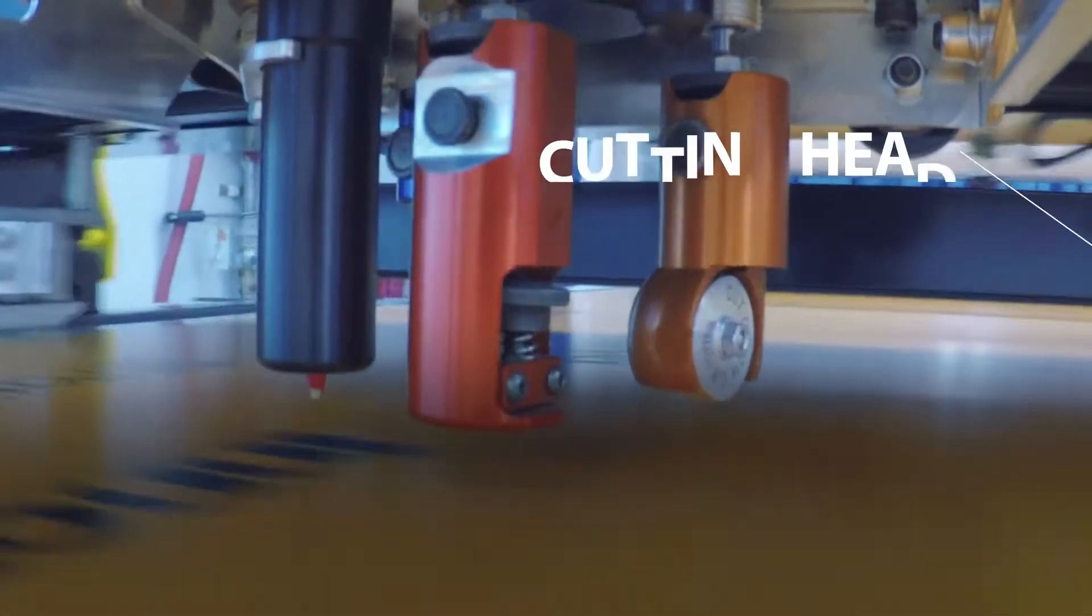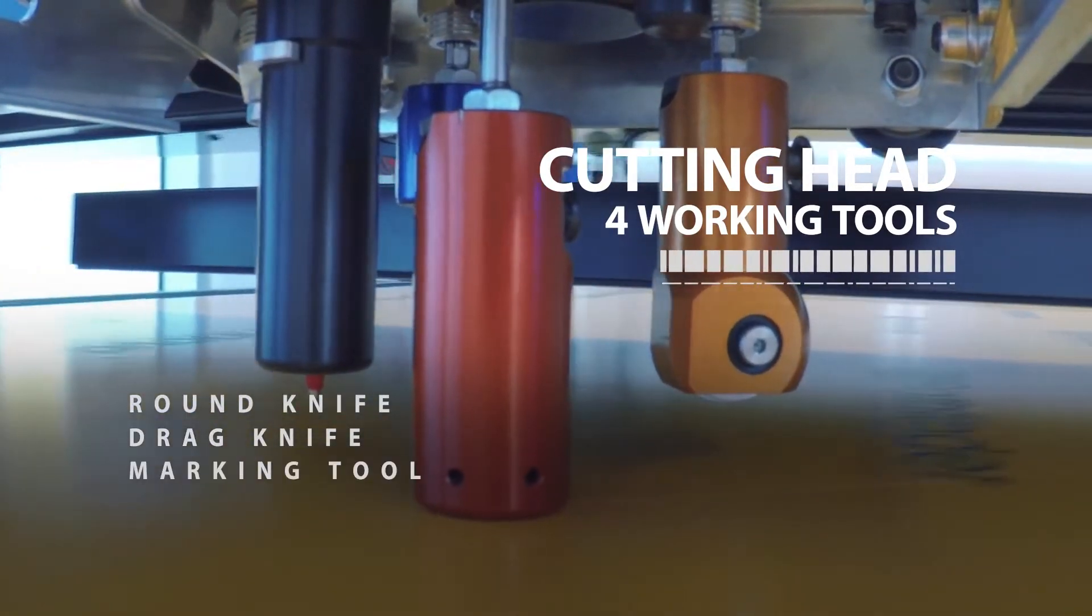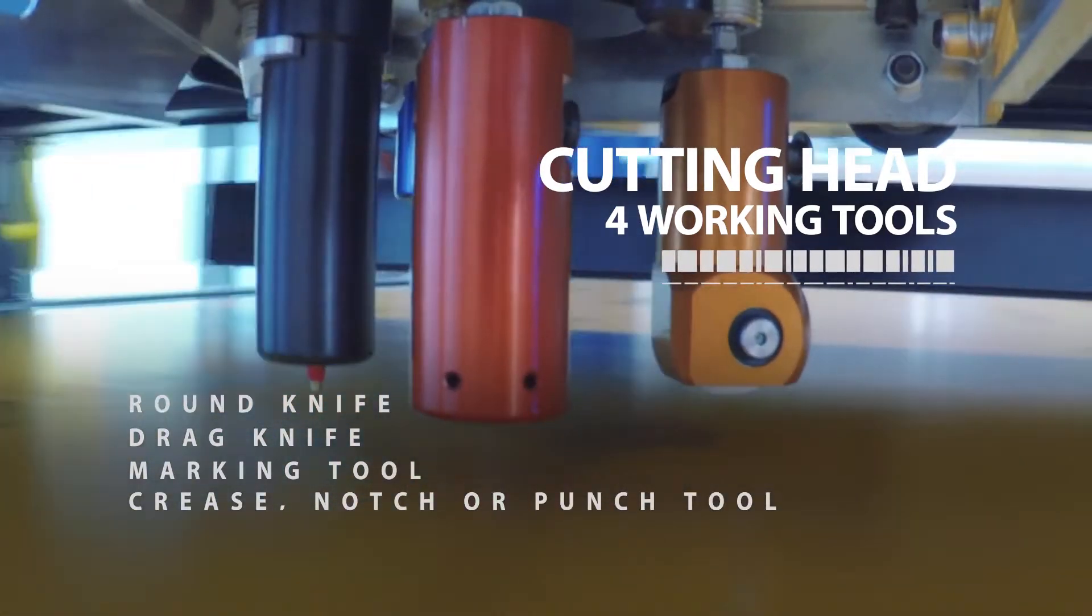The cutting head comes standard with four working tools including a round knife for crush cutting, a drag knife, a marking tool and a crease, notch or punch tool.